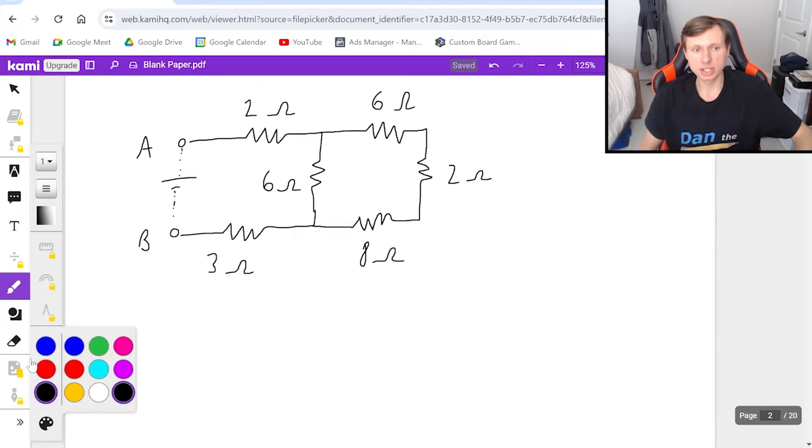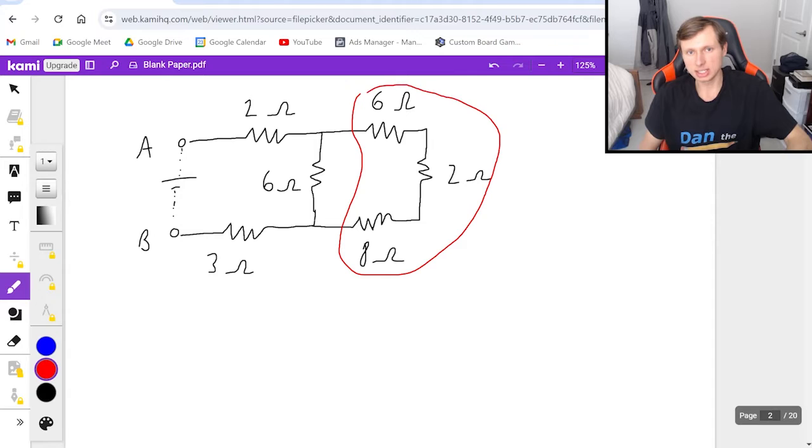But the first thing we're going to do is we are going to combine these three resistors in series. Number one, because they are all in series with each other, and number two, because they are furthest away from the battery. So then in this case, they're in series, I can just add them up. 6 plus 2 plus 8 gives me 16, and that's ohms.